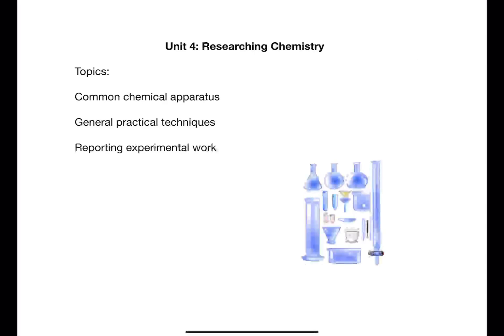Unit 4 is called researching chemistry and covers common chemical apparatus, general practical techniques and reporting of experimental work. A lot of which is often covered throughout the course as part of the practical work that happens within different topics.